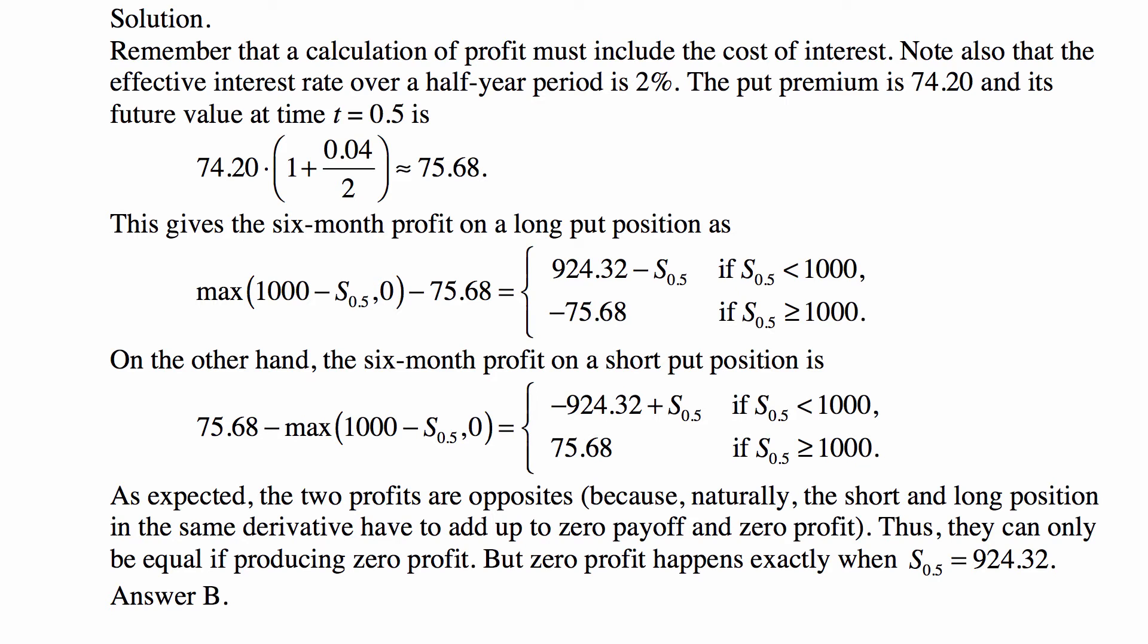1,000 minus 75.68 is 924.32, so the net to you will be 924.32 minus S_0.5, which is the price of the stock at time 0.5. And your net will be negative 75.68 if the stock price is above 1,000 and you don't exercise the put option.